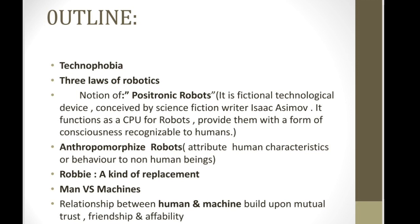When we compare this with the character of Grace Weston, we see she is the one who deprives her own daughter of the thing that makes her happy, and she says 'children's griefs are not long-lasting.' The last one is about the relationship between humans and machine. The whole story revolves around a human and a machine - Gloria and Robbie - and their relationship is built on mutual trust, friendship, understanding, and affability.